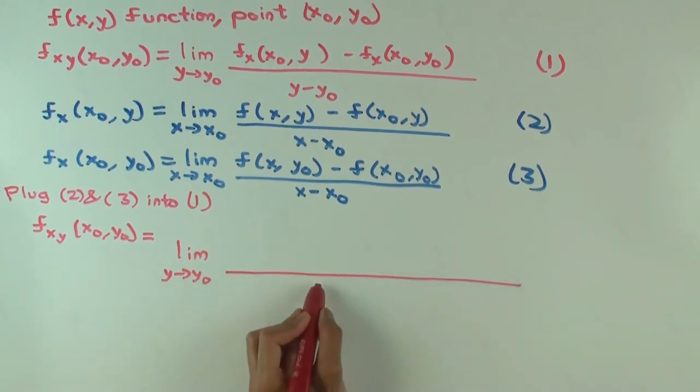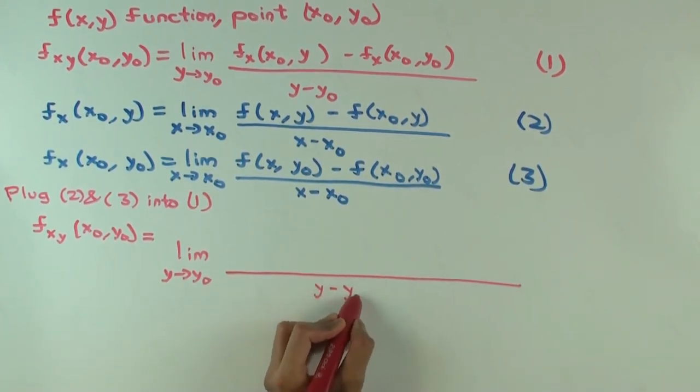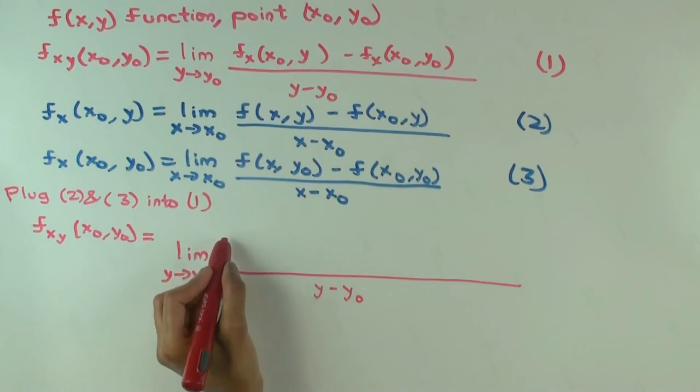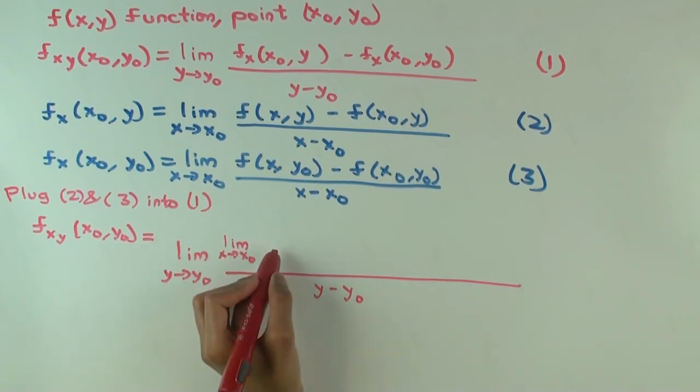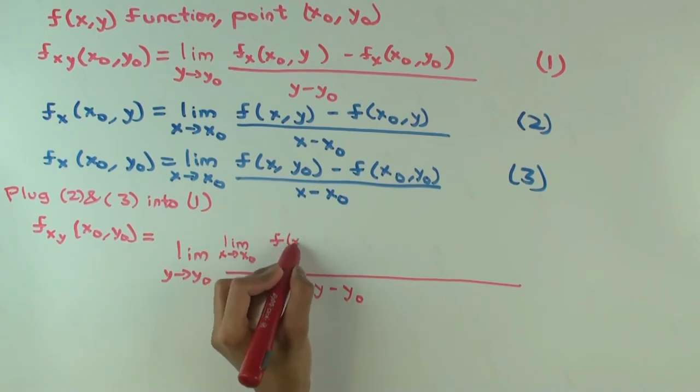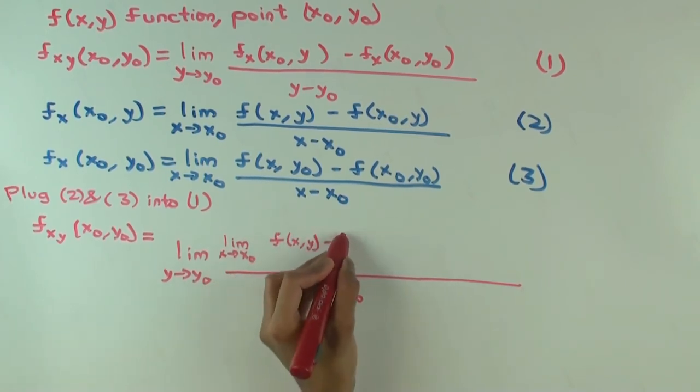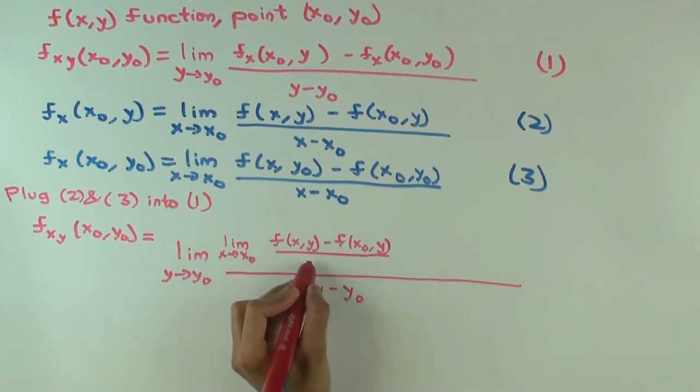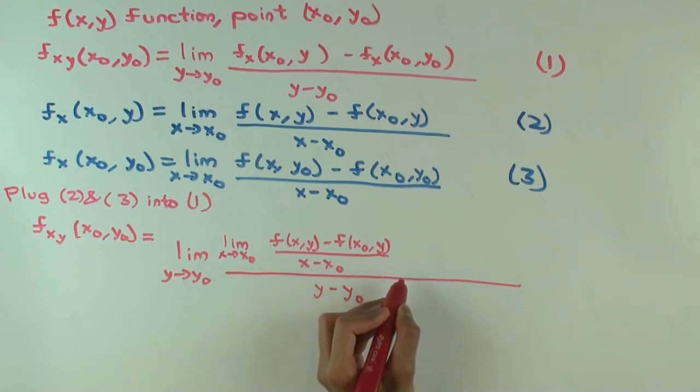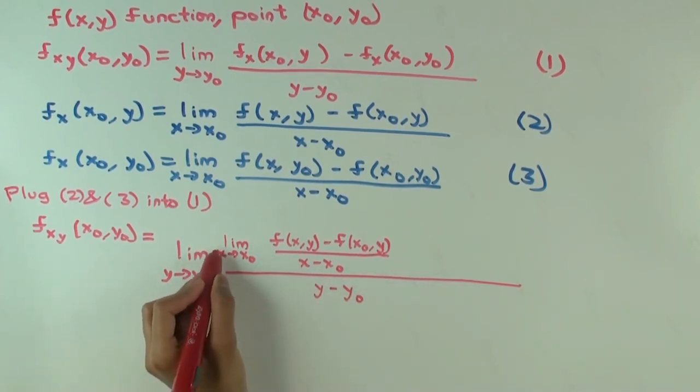Y minus y0. What is the first expression? So you'll get limit as x approaches x0 of f of (x, y) minus f of (x0, y) over x minus x0.